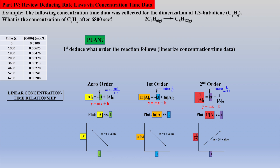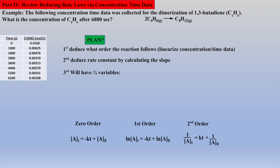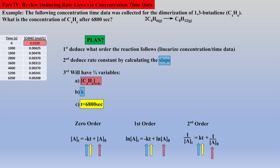The concentration of A, natural log of the concentrations of A, or 1 over the concentrations of A versus time? Next, the slope will allow us to deduce the rate constant. At this point, three of the four variables will be known regardless of which order the reaction follows. The initial concentration was given, the rate constant will have been deduced from the slope, and the time will be equal to 6,800 seconds. Thus, the remaining concentration of 1,3-butadiene can be easily calculated.